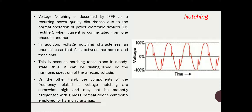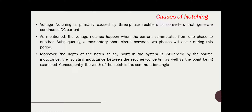Now, what are the causes of notching? You can see one waveform here — this is a voltage waveform which has notching in addition to the normal pure waveform. This kind of waveform is due to voltage notching. Voltage notching is primarily caused by normal operating devices, as mentioned.